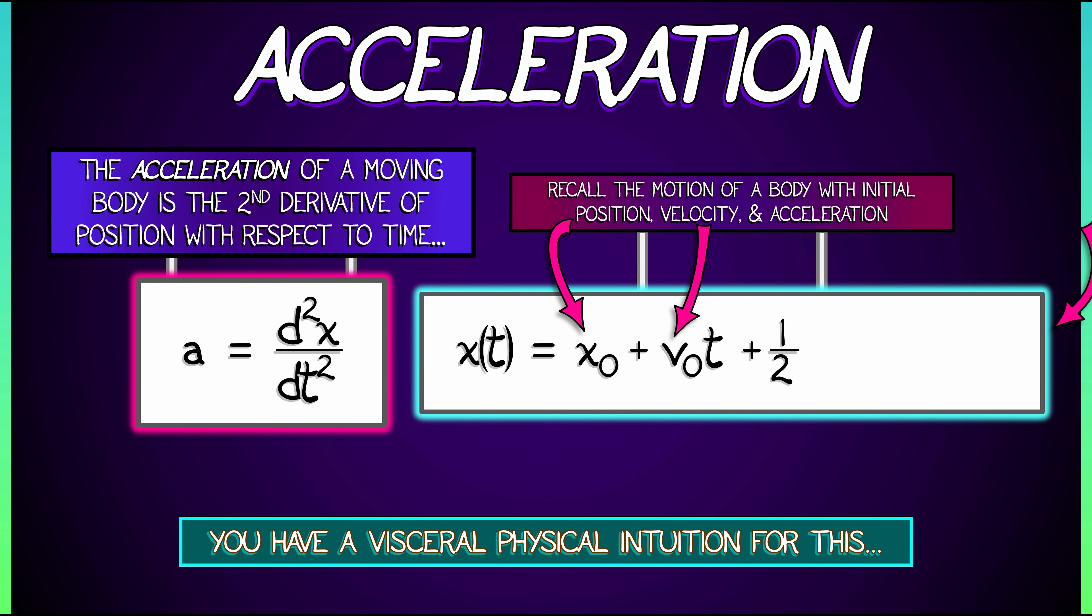Well, it's 1 half at squared, right? But really, a0 times t squared, where a0 is the initial acceleration.